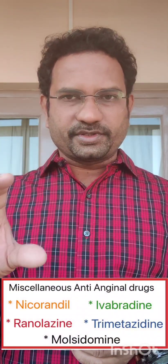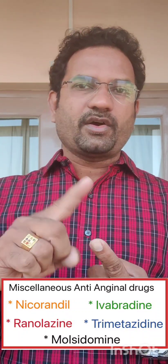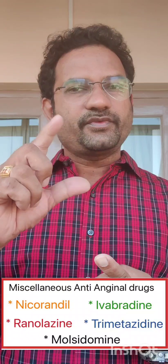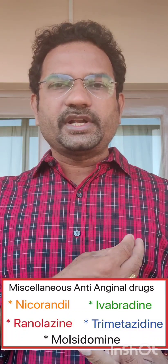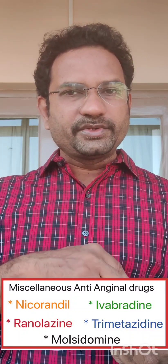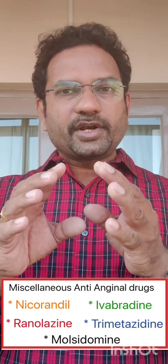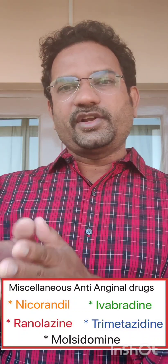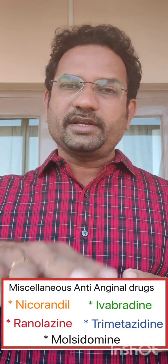Along with these, there are certain new miscellaneous drugs. I will just mention their names because they may come as options. The first one is nicorandil — nicorandil is a potassium channel opener and nitric oxide releaser, so it causes vasodilation. After that, ivabradine — ivabradine causes bradycardia, reducing heart rate, which reduces oxygen demand. Ranolazine — it blocks sodium channels and reduces cardiac activity. Trimetazidine is a drug which inhibits fatty acid oxidation. When fatty acid oxidation is reduced, the heart will depend upon glycolysis, so oxygen demand is reduced.